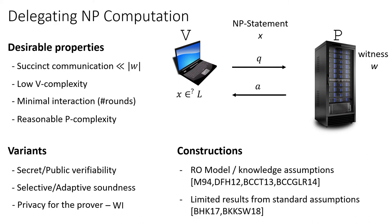In terms of known constructions, in the random oracle model or under knowledge assumptions, we can get the best possible parameters and even a single message argument system with optimal communication and computation complexity. In the standard model, things are more complicated and we only have limited results for subclasses of NP statements, and these protocols require secret verifiability. What we do in this work is try to enhance the properties of these NP delegation schemes and, in particular, show how to add witness indistinguishability generically to these types of arguments.